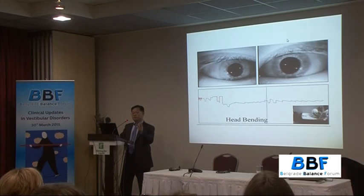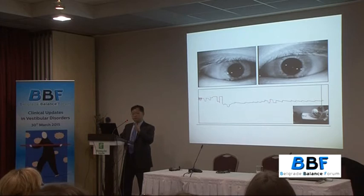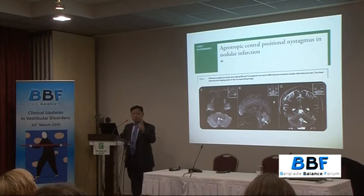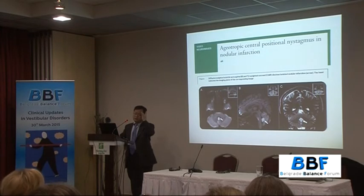What is the diagnosis? Ageotropic positional nystagmus with initially spontaneous vertigo, but a normal head impulse test — is it BPPV? This patient showed isolated nodular infarction. Lesions involving the nodulus may show central positional nystagmus, especially the ageotropic type. When you see a patient with acute vertigo and ageotropic positional nystagmus, first try repositioning if there are no other signs. If it doesn't work, think about isolated nodular infarction — especially when there is severe imbalance.